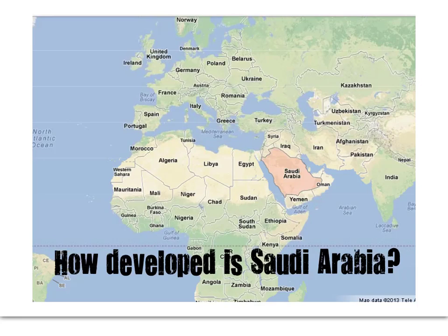In the last video, we evaluated some of the measures of development and had a look at some of them individually. Now, as well as doing that, you can actually assess them overall. How effective are social and economic measures at measuring a broad concept like development? To help us with this, we're going to pose the question: just how developed is Saudi Arabia? That's going to help us get an overview in evaluating economic and social measures of development.